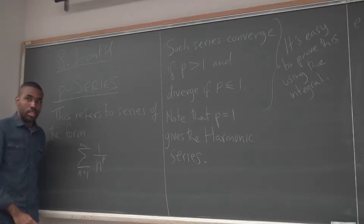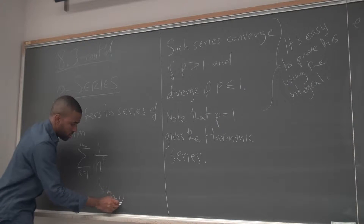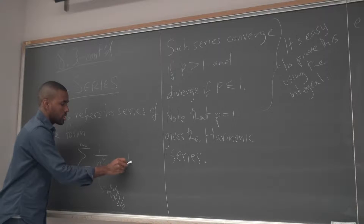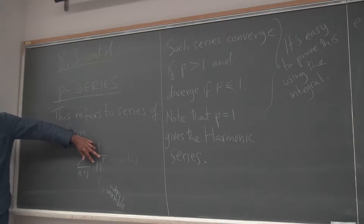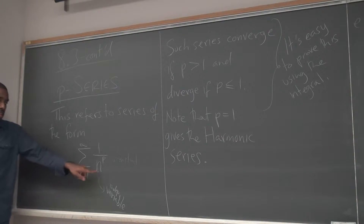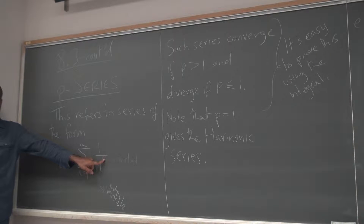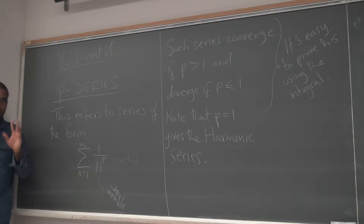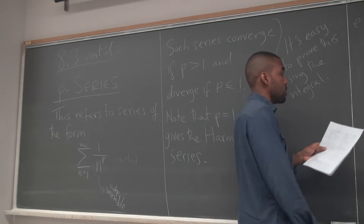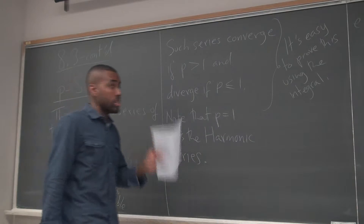The base is your variable — it's your independent variable as far as this series is concerned. P is a constant. If these two roles were switched, what would we have? A geometric series. This is very important to remember: the base is the variable, the power is a constant — that gives you a P-series. If the base is a constant and the power is n, that would be a geometric series. Things can look familiar, you just have to know what is what and what test applies to which.